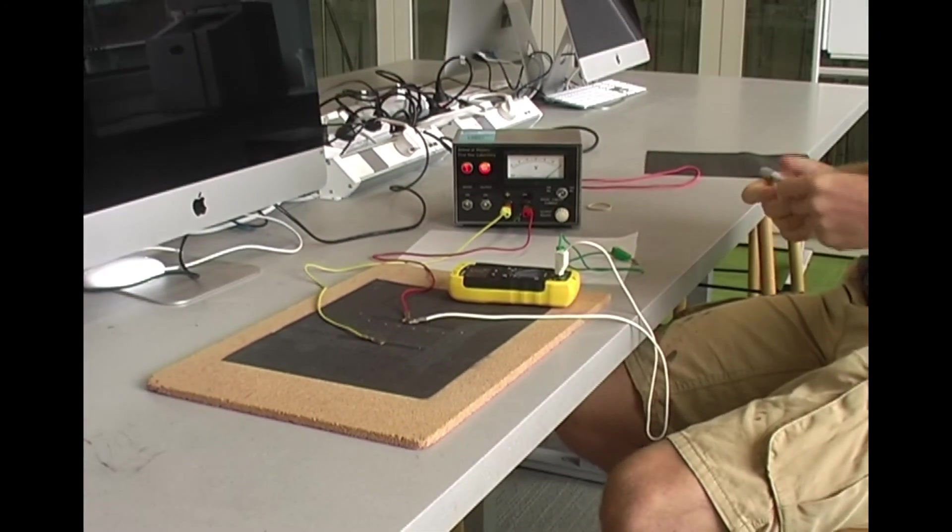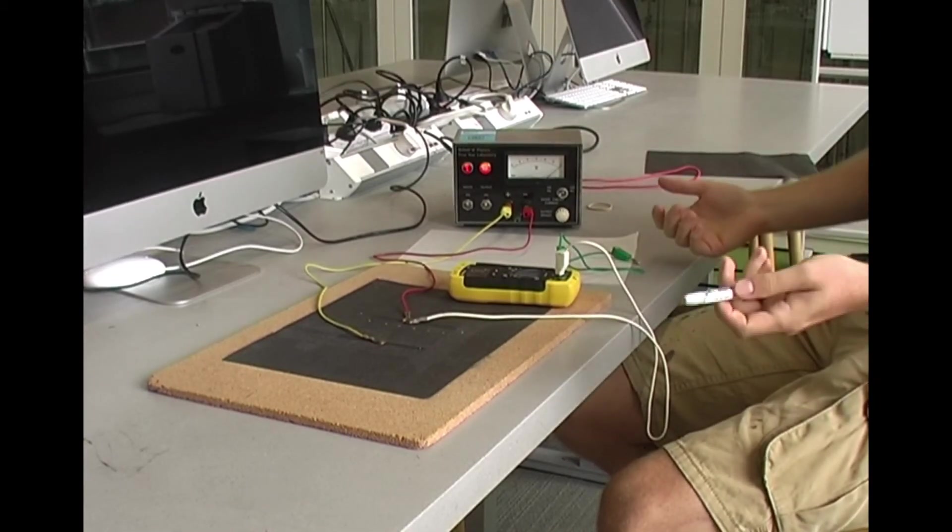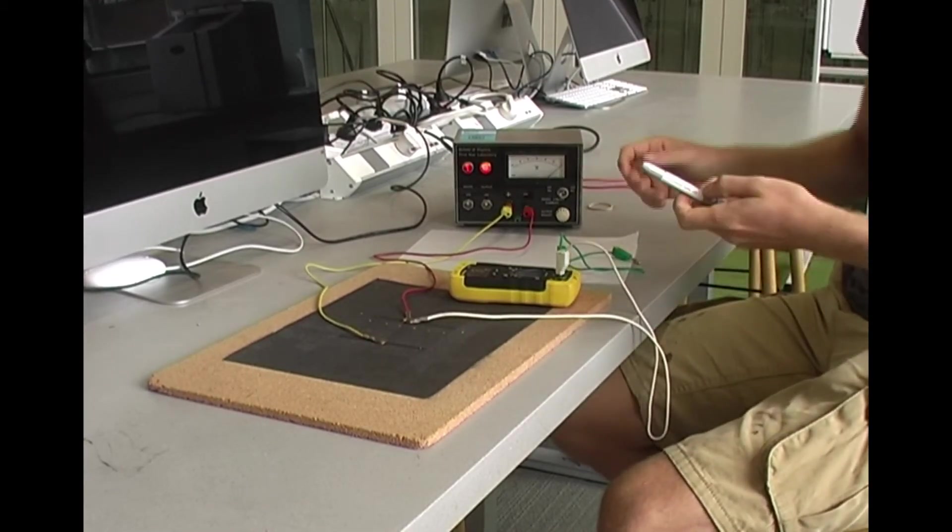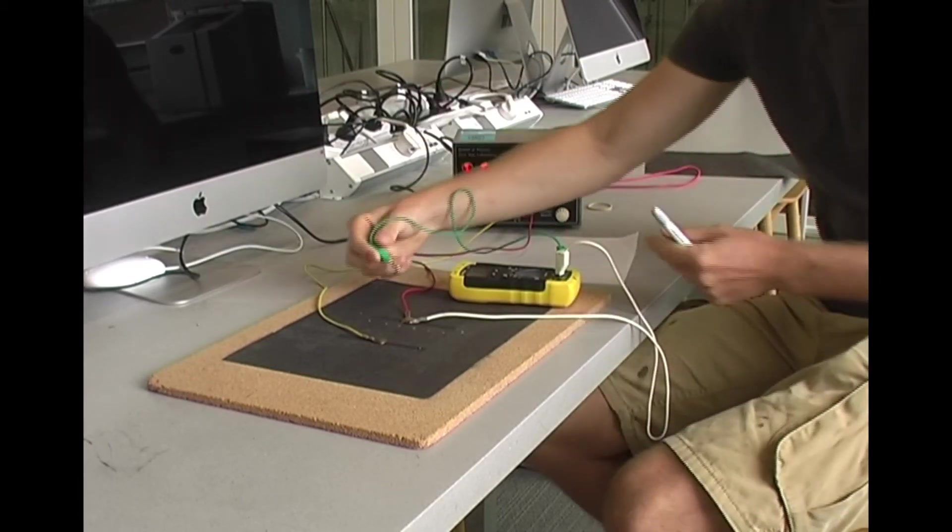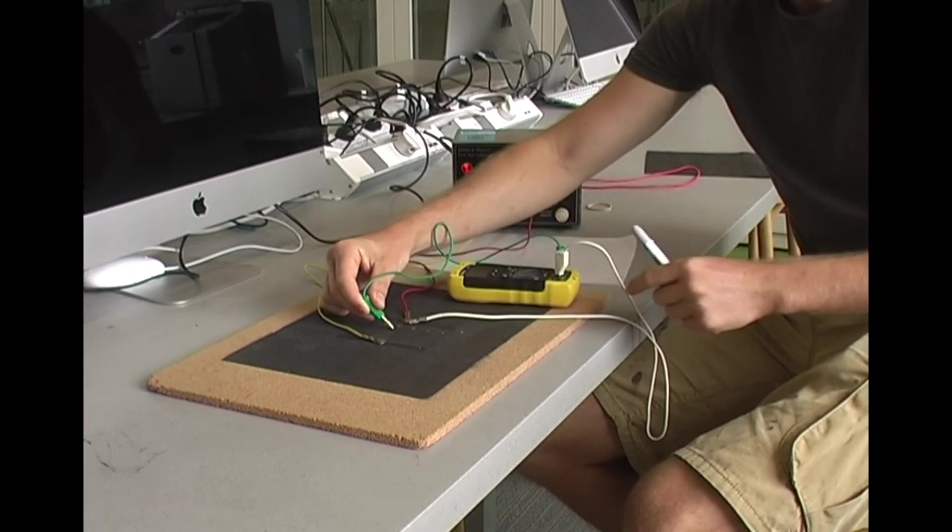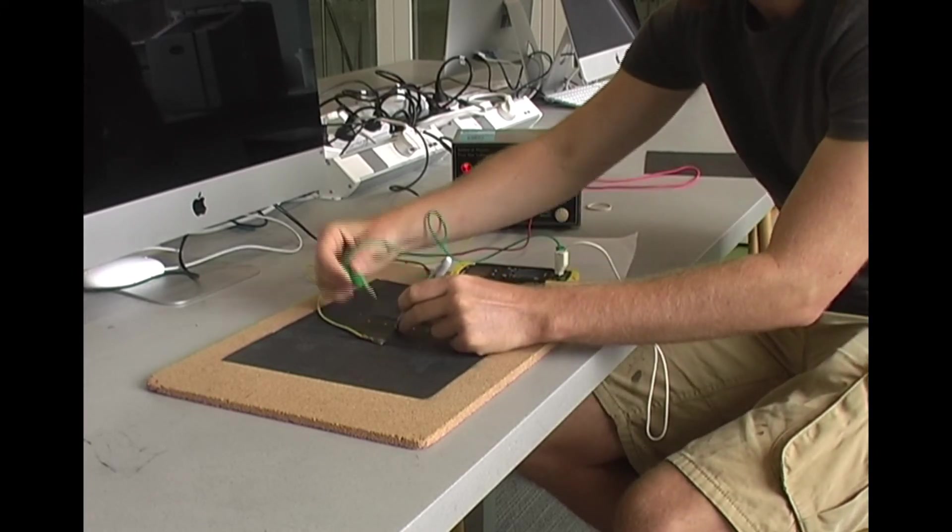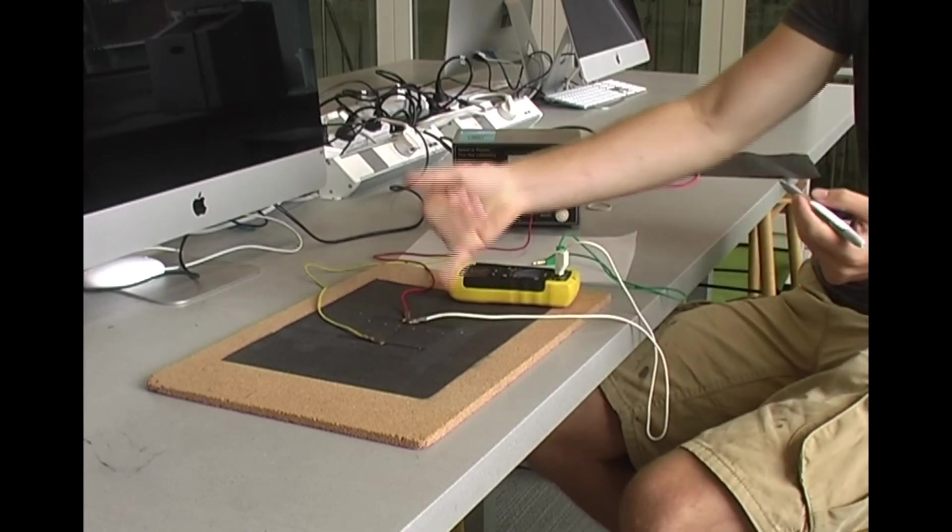So once you've done that, you go ahead and do the 4 volt line, and then the 6 volt line, and so on. So just to explain so you know what I mean, the 4 volt line is you just move your probe until you see the multimeter read 4 volts, and then you place another dot here. And you do exactly the same thing as you did with your 2 volt line.